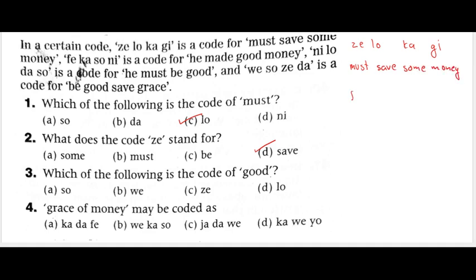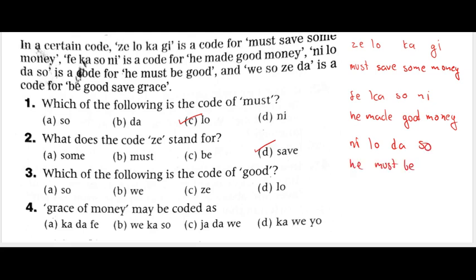This is the word. Then what is the result? 'fe ka so ni' — he made good money. Next is 'ni lo da so' — he must be good. 'be so zi da' — be good save grace.